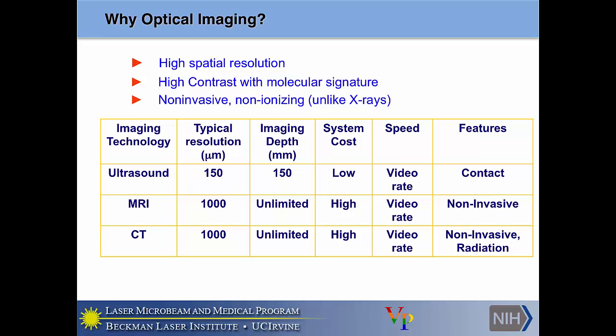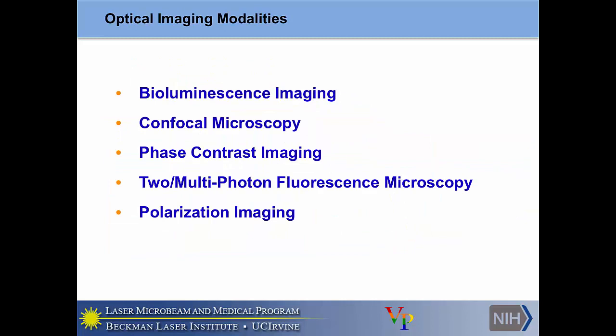The answer lies in the fact that optical imaging can provide high spatial resolutions with high contrast and, in some cases, molecular signatures for specific targeting of samples. In addition, optical imaging allows for non-invasive probing of tissue samples using non-ionizing radiation — essentially just light — so it's safe to use in a variety of in vivo situations. Commonly used optical imaging modalities include bioluminescence, confocal microscopy, phase contrast techniques, standard or multi-photon fluorescence, and polarization techniques.